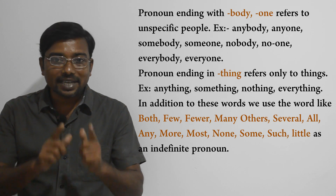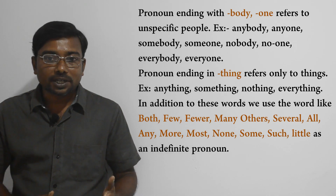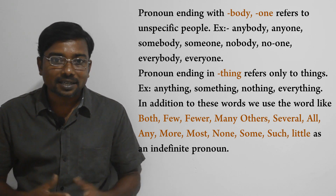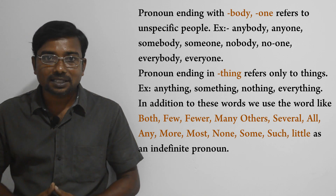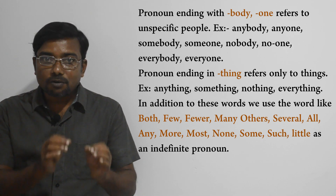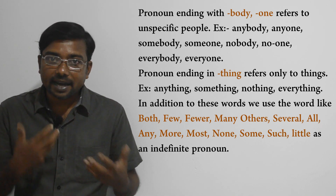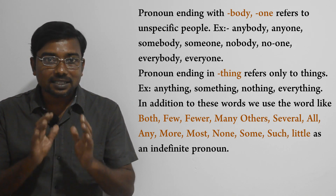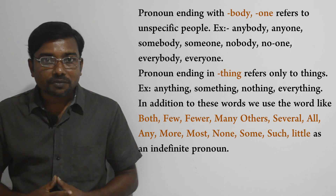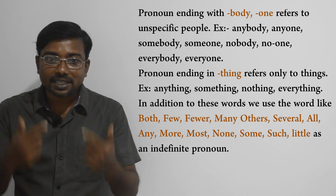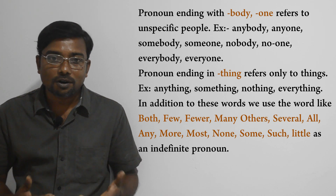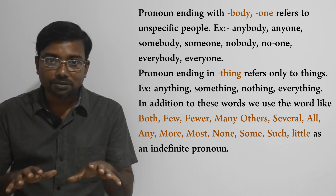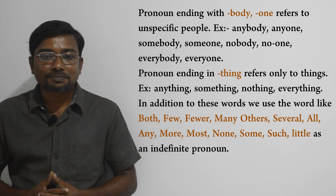Pronouns ending with body or one — for example, anybody, anyone, somebody, someone, everybody, everyone, nobody, no one — refer to unspecific people. Pronouns ending with thing — for example, anything, something, nothing, everything — refer to unspecific things. In addition, we use some other words as indefinite pronouns, such as some, much, several, all, each — there are a lot of words we use as indefinite pronouns. These words all refer to unspecific things or people, and they can be singular or plural.